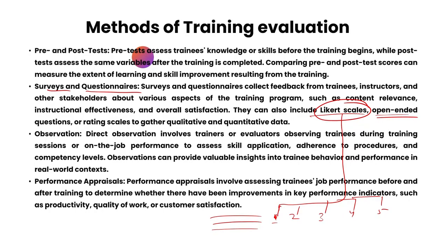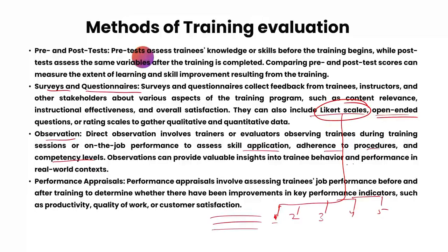Next is the observation method. This includes direct observation wherein trainers or evaluators directly observe trainees' behavior during the training session or on-the-job performance to assess skill application, whether they are adhering to processes, and to check their competency levels. Observations can provide valuable insights into trainee behavior very instantly, helping us understand the effectiveness of the training and gaining insight into behavior in a real-world context.